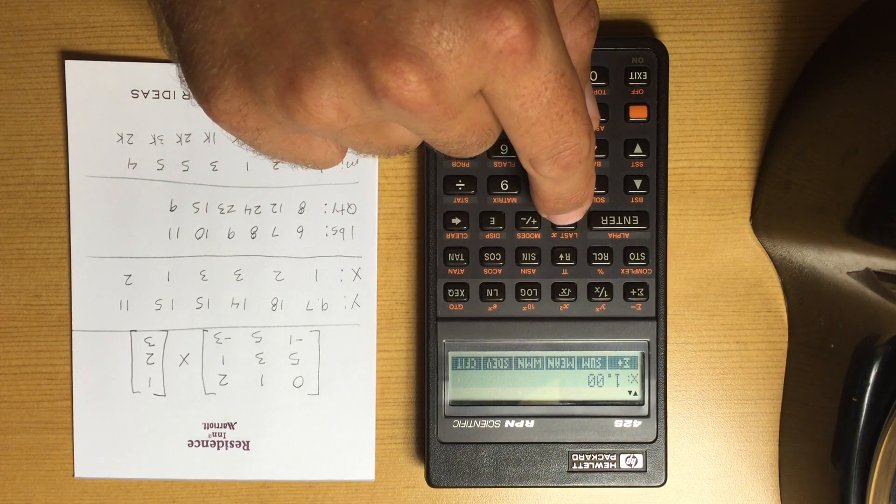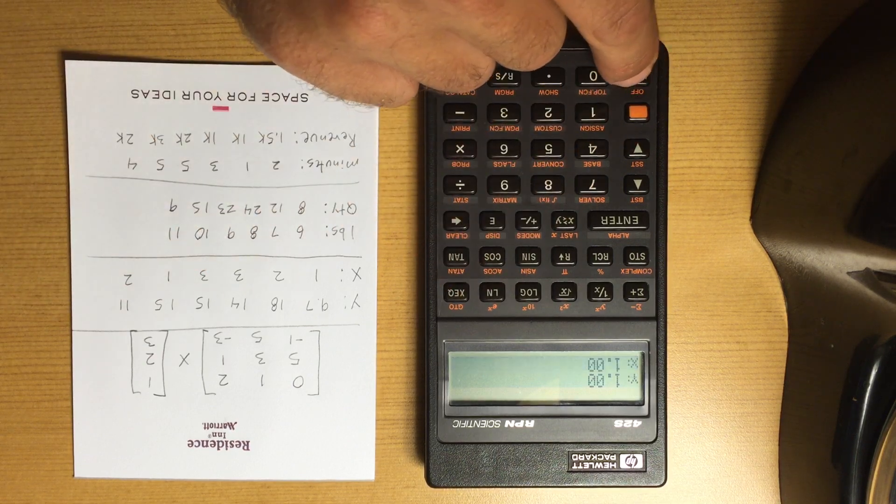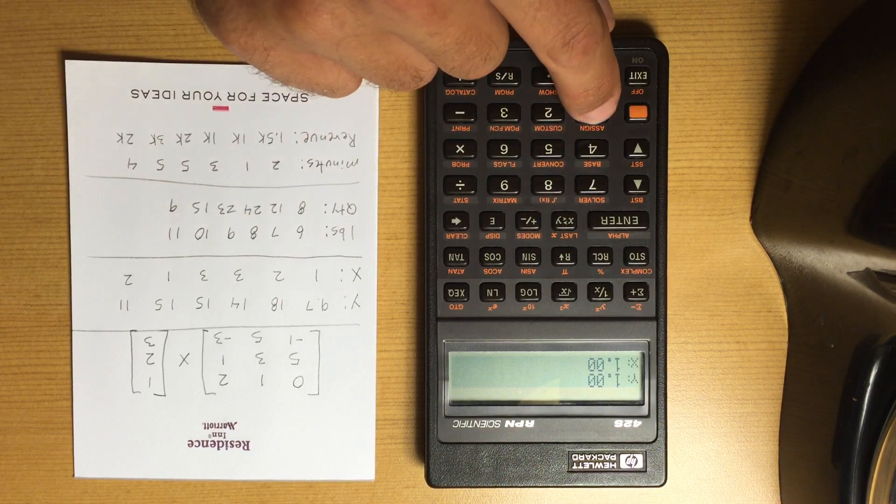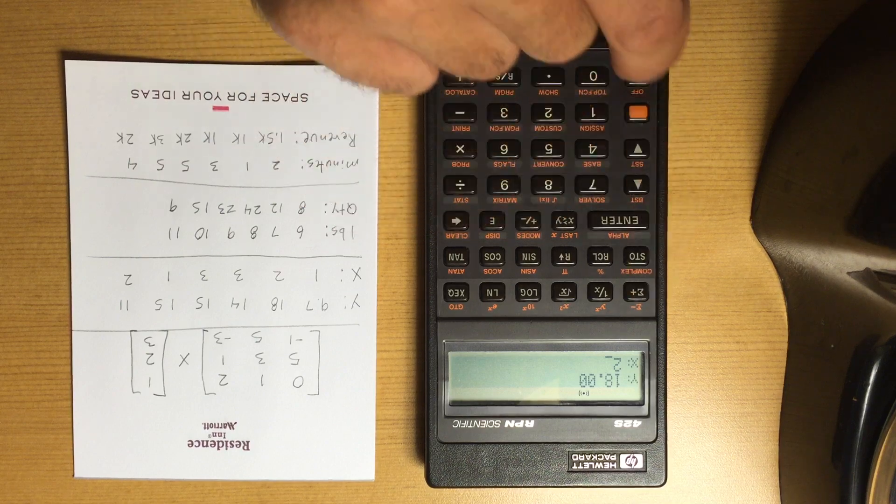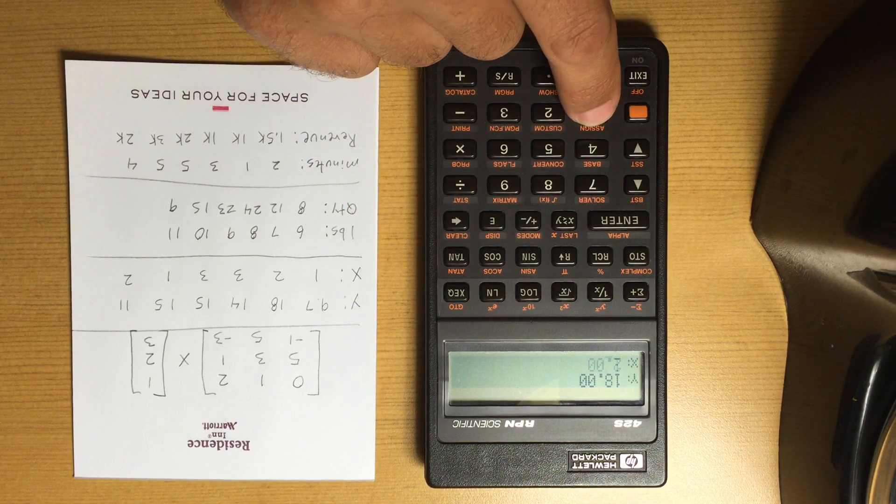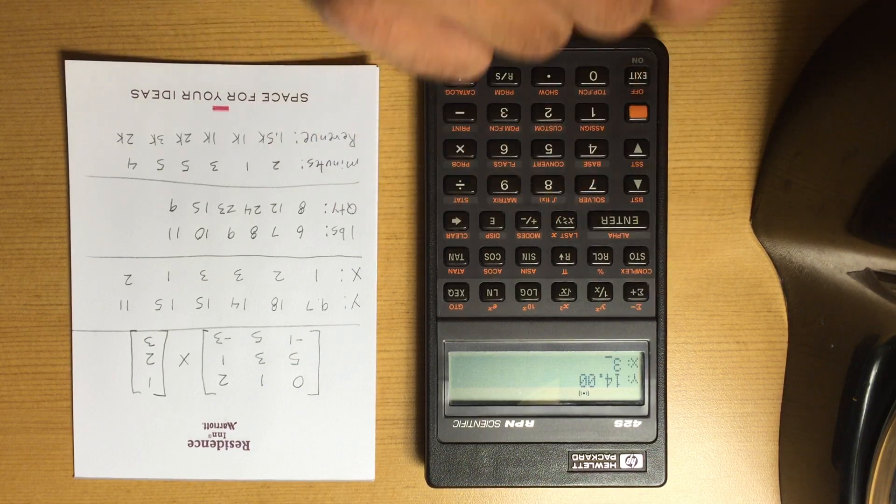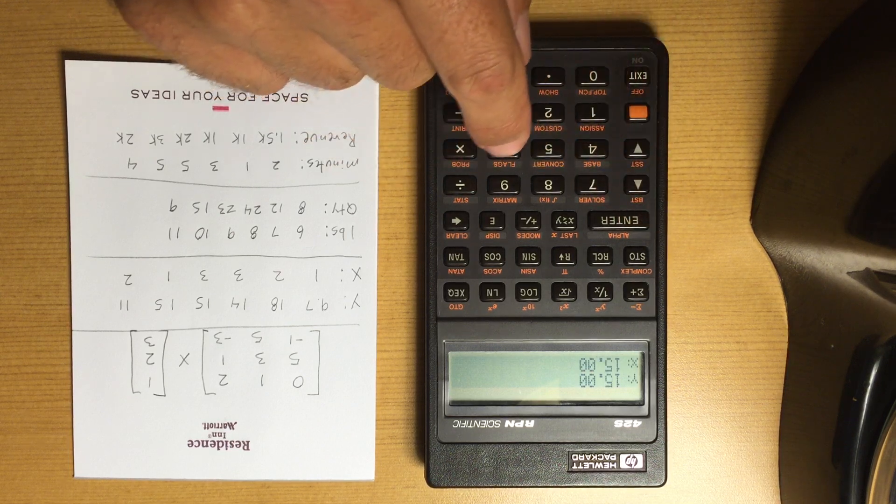So I've got one in there. Now enter 18 and 2, add that. I've got 2 in my register. 14 and 3, add that.